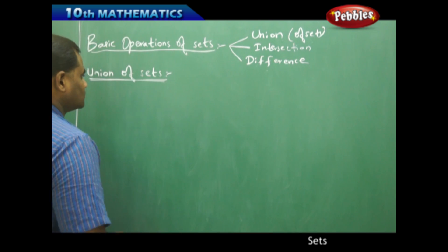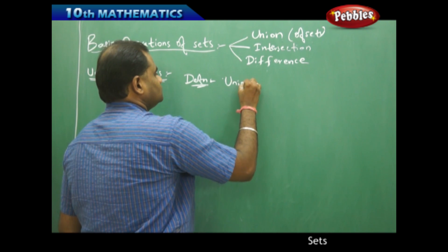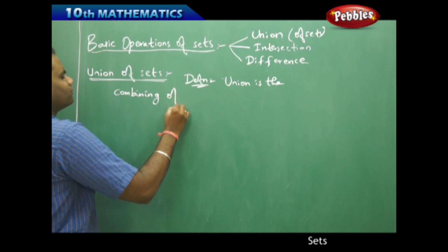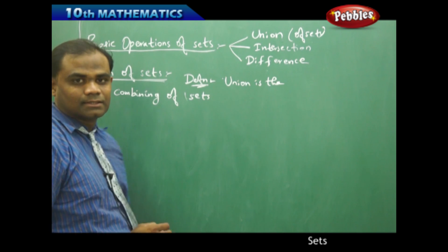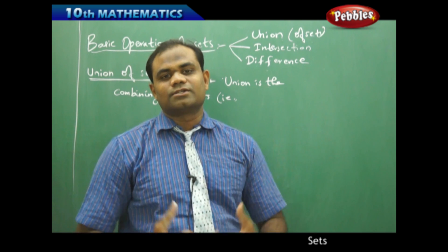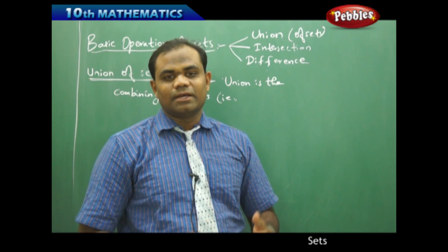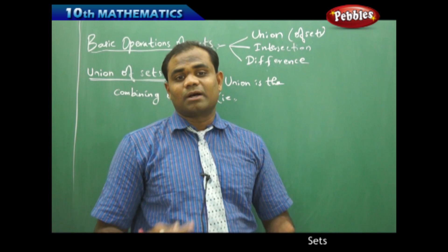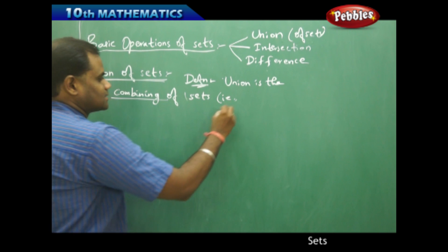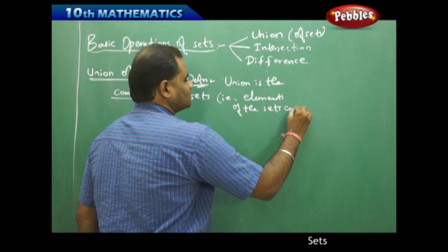So let's start with the basic definition. Union is the combining of sets — that is, combining all the elements of the individual sets. When I say I am combining two classes, I indirectly mean combining all the students of those classes. Same way, when I say I am combining two sets, I mean I am combining all the elements of set A and set B. So union is the combining of sets, that is, all elements of the sets considered together.